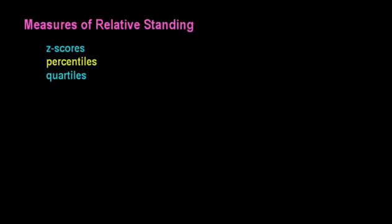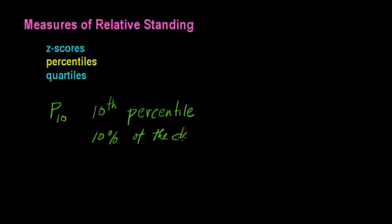Percentiles divide a set of data up into 100 groups, each group representing 1% of the data. So our notation would look something like this: a P with a subscript 10 would represent the tenth percentile, and what that means is 10% of the data is below this value.